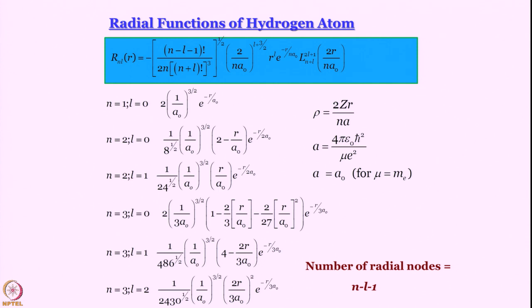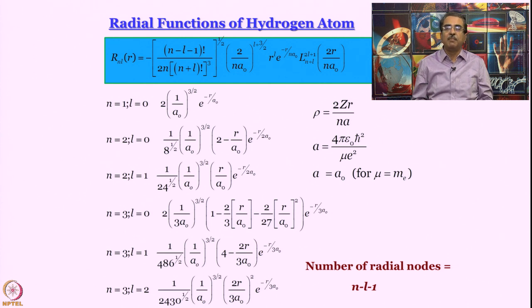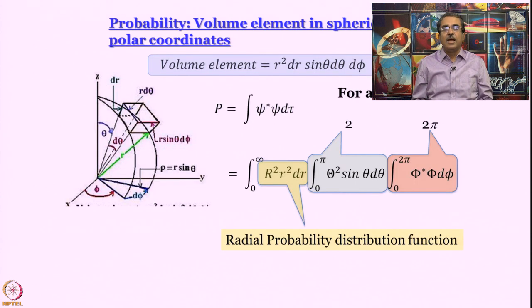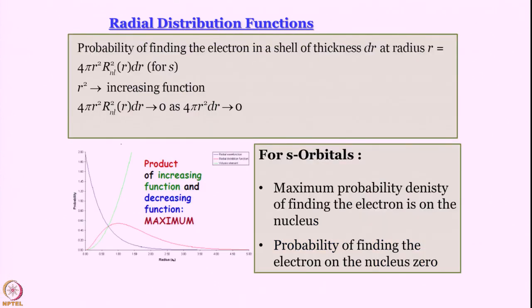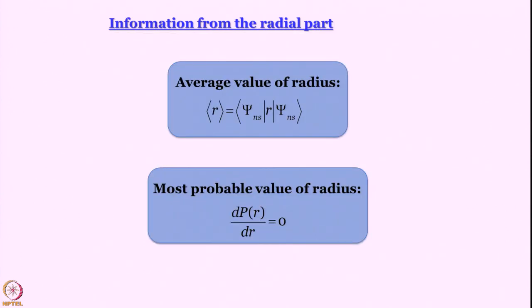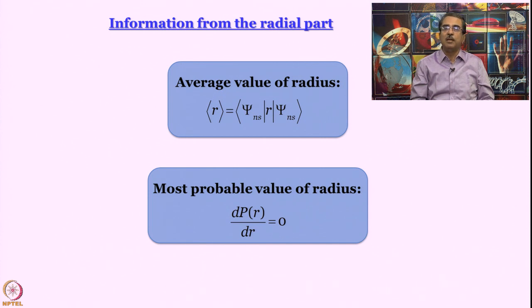We look at the radial and angular parts separately. We have already shown you the radial functions of the hydrogen atom and reminded you that the number of radial nodes is n − l − 1. We also remind ourselves that we have to talk about probability and not probability density. So r² |R(r)|² dr is essentially the radial probability distribution function. For an s orbital this becomes 4πr². Taking into account the volume element, there is some non-zero radius where the radial distribution function undergoes a maximum. The most probable value of radius and the average value of radius are usually not the same.